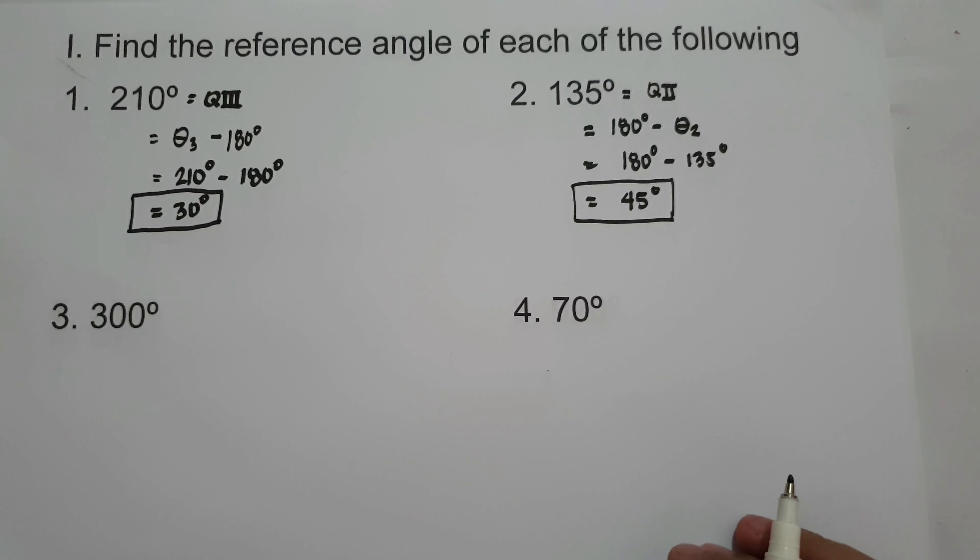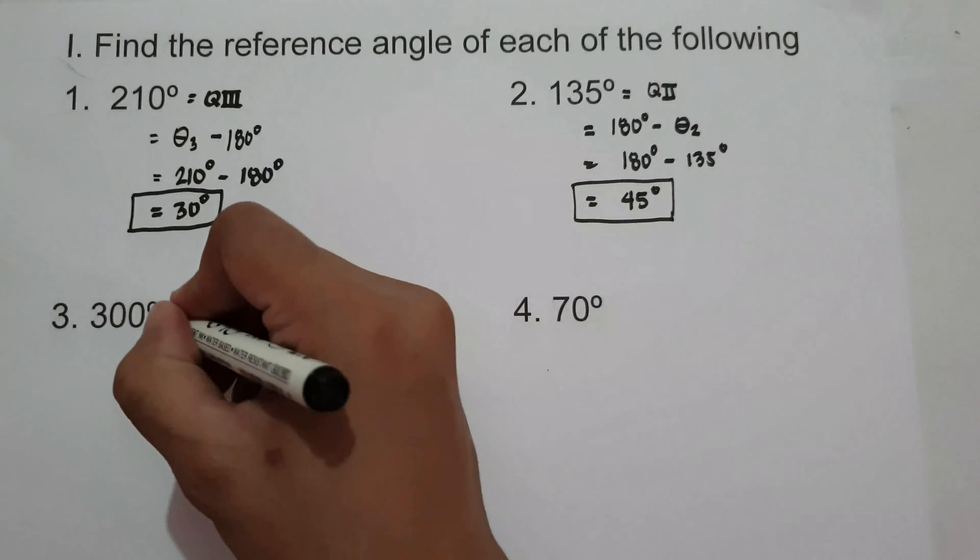What about number 3? What is the reference angle of 300°? It is located in quadrant 4, between 270° and 360°. The reference angle in quadrant 4 is 360° minus the given angle. So we have 360° minus 300°, which is 60°. So the reference angle of 300° is 60°.